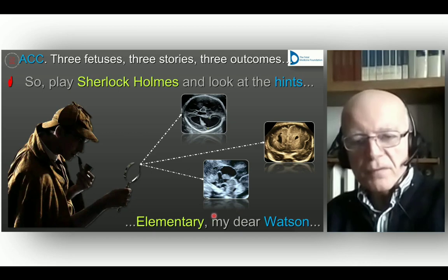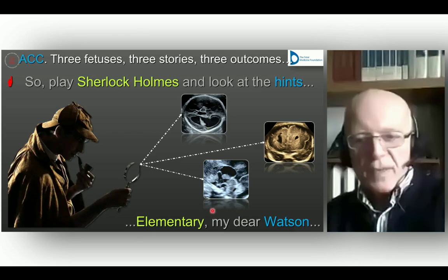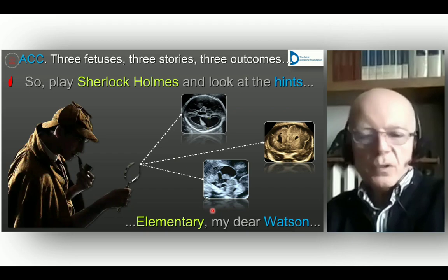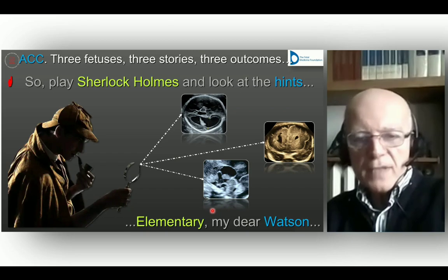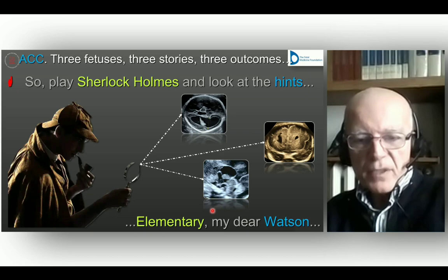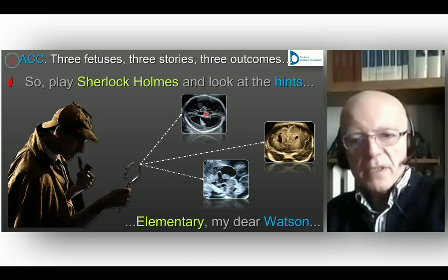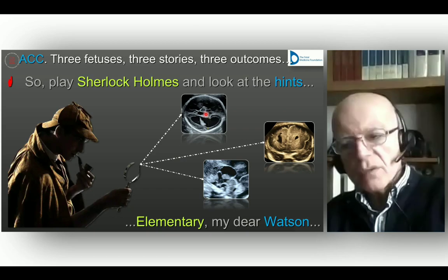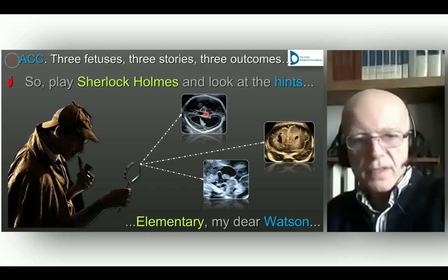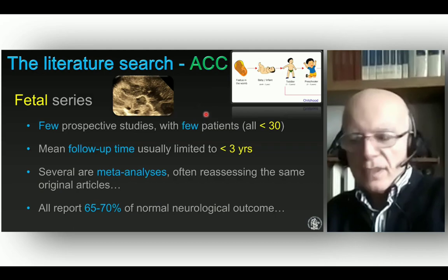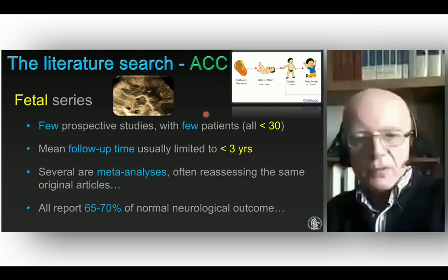We started in all three cases with suspicion of abnormal ventriculomegaly — too large for ACC — and ended up with three different diagnoses. In prenatal diagnosis of malformation, you have to play Sherlock Holmes and look at the hints that will lead you to the final diagnosis. This is elementary for the expert, but it is an important lesson for those learning our discipline. Look at the hints and they will give you the final answer in most of the cases.